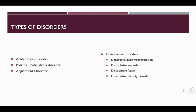Dissociative amnesia is the inability to recall personal information related to traumatic or stressful events. The amnesia can cover events of a certain period of time or just certain details. Dissociative fugue is a type of dissociative amnesia in which the client travels to a new area and can't remember their own identity and at least some of their past; it can last weeks to months and usually follows a traumatic event. Dissociative identity disorder is when a client displays more than one distinct personality, with a stressful event precipitating the change from one personality to the other.